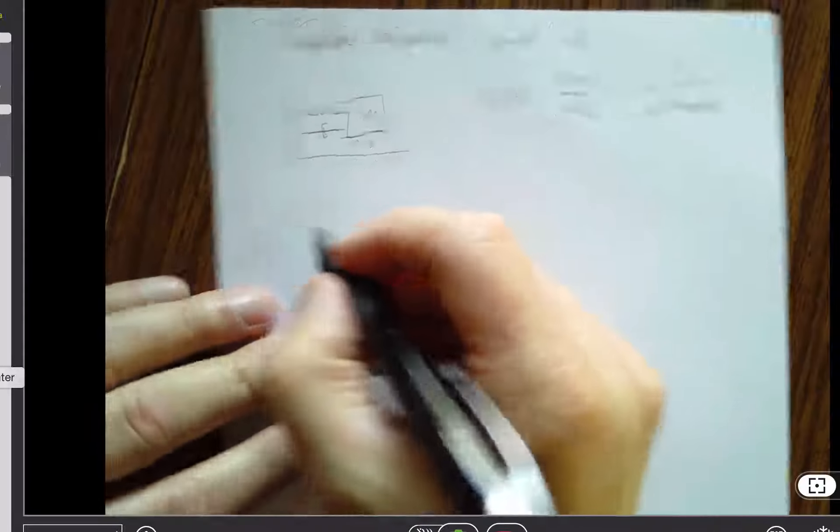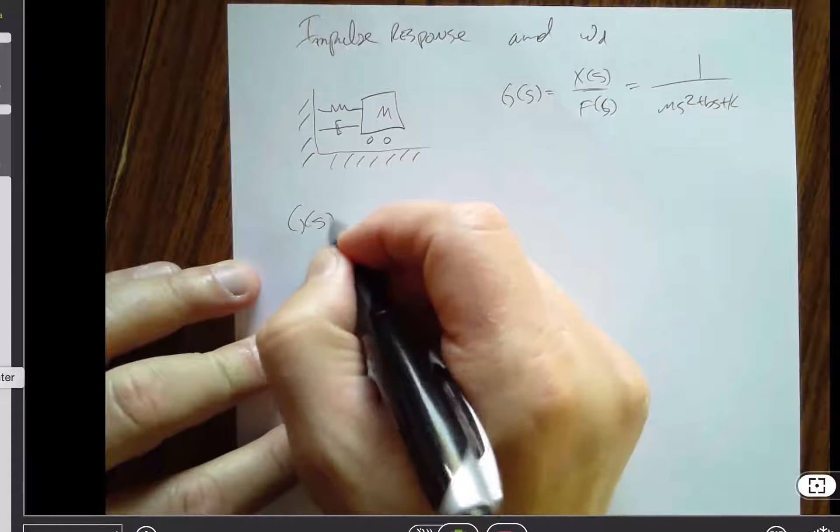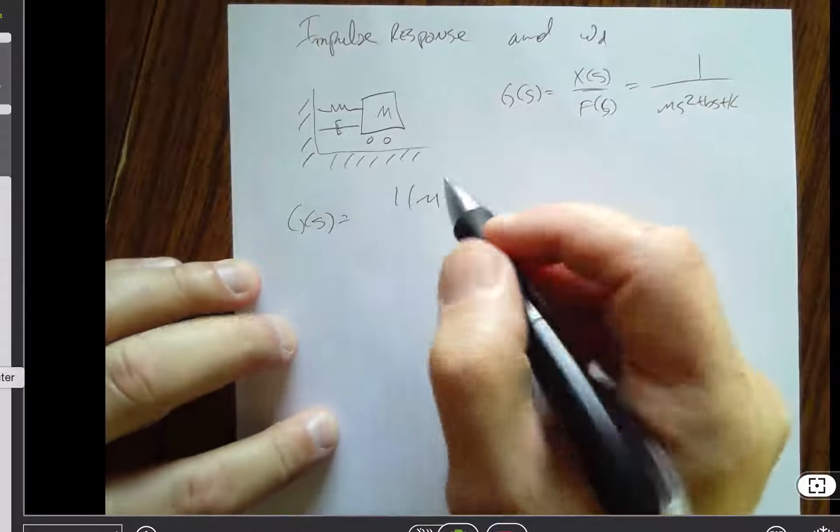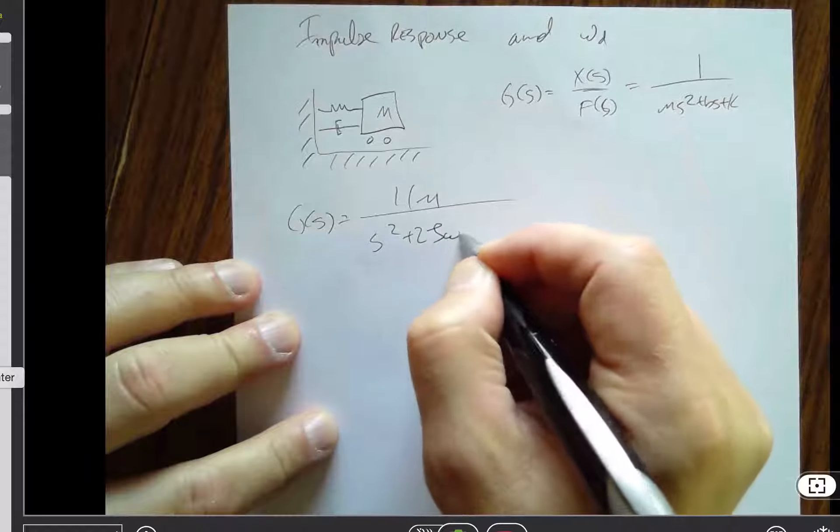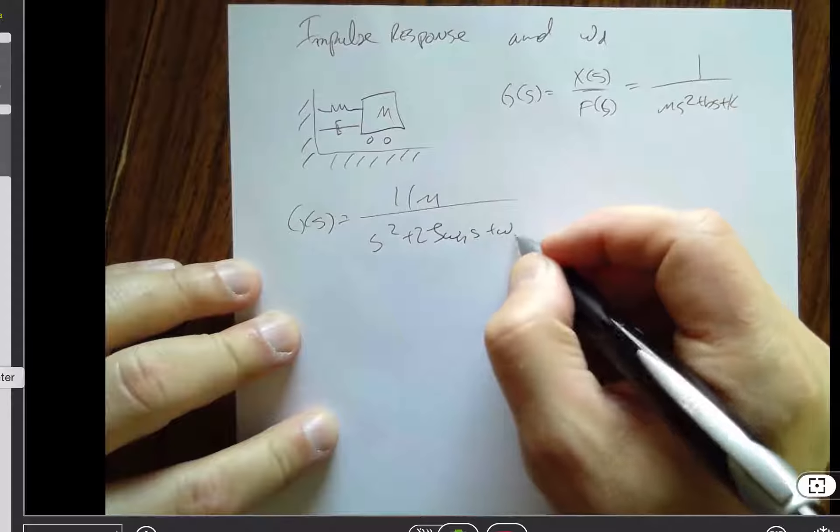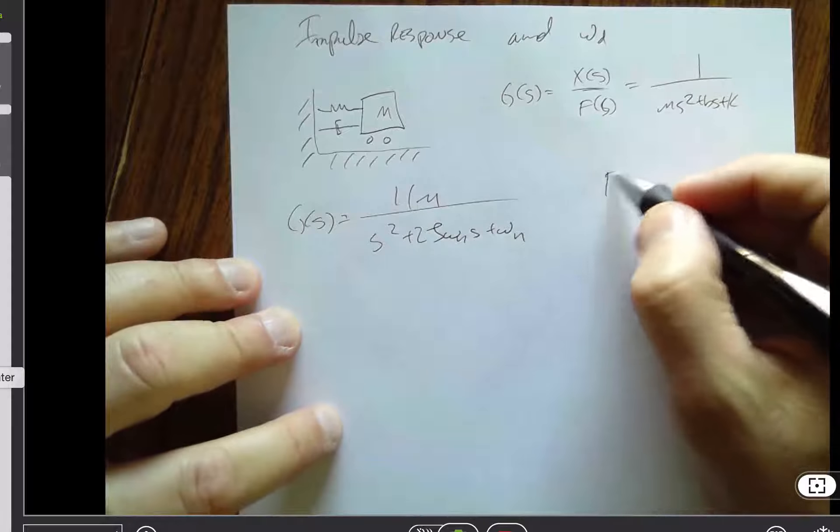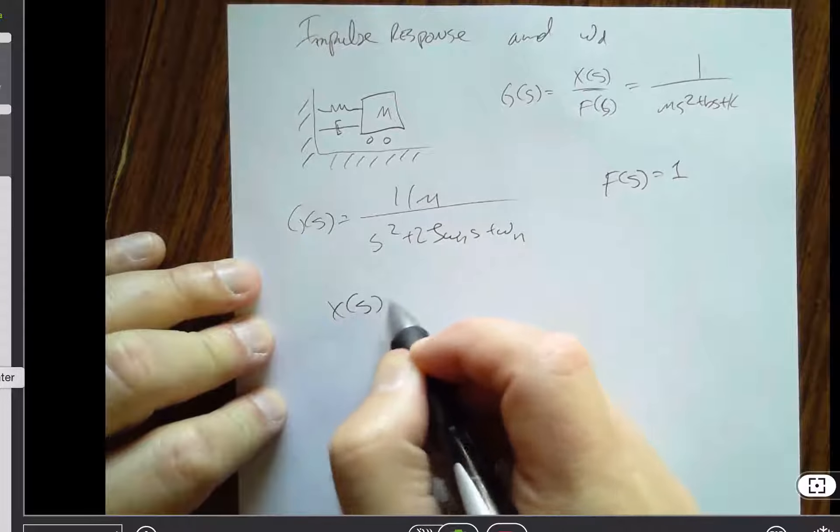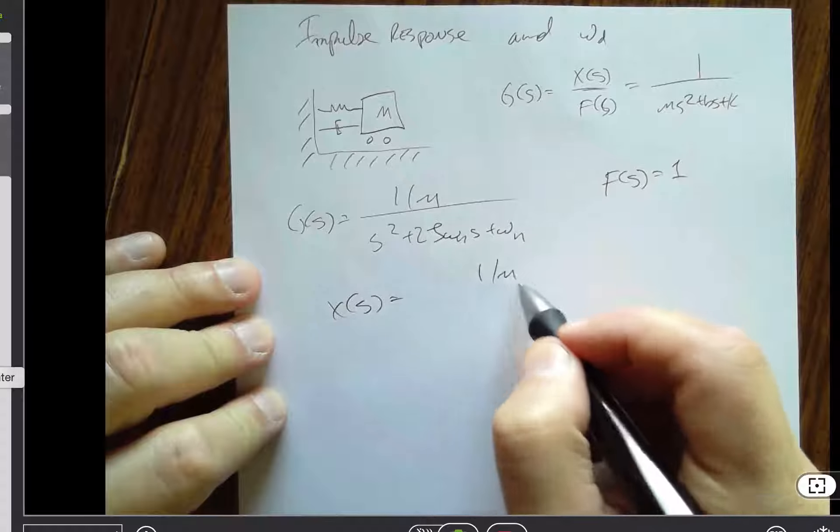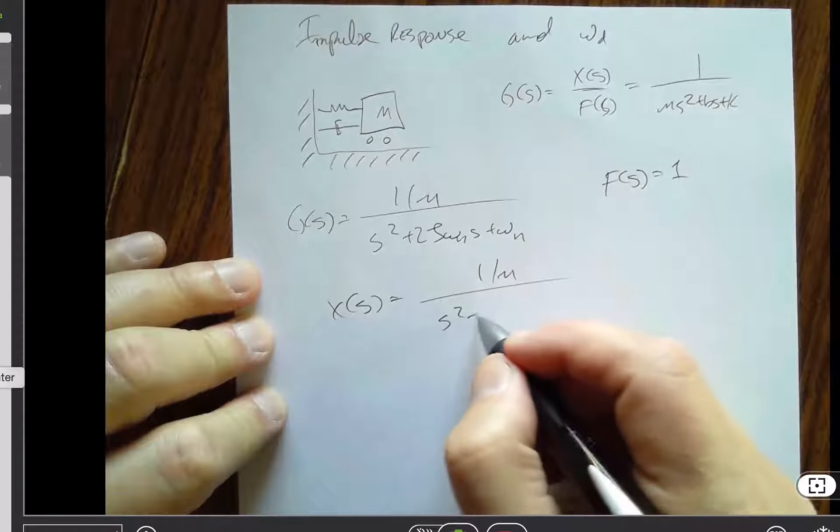But that can also be written as 1 over ms squared plus 2 zeta omega ns plus omega n squared. And if we're talking about an impulse response, then f of s is just equal to 1, which means that x of s is actually equal to exactly the same thing as the transfer function.